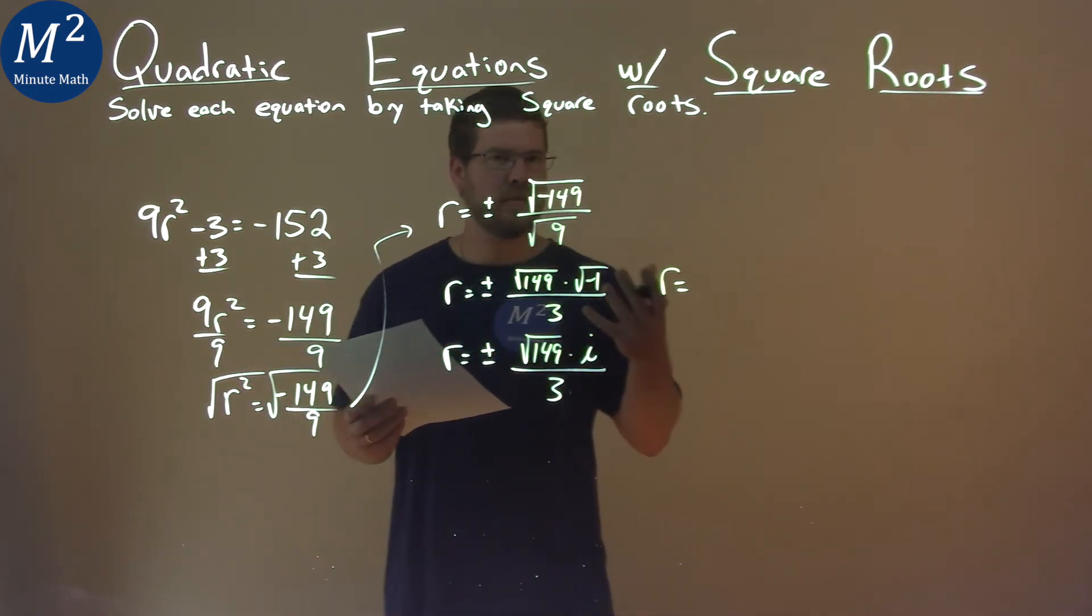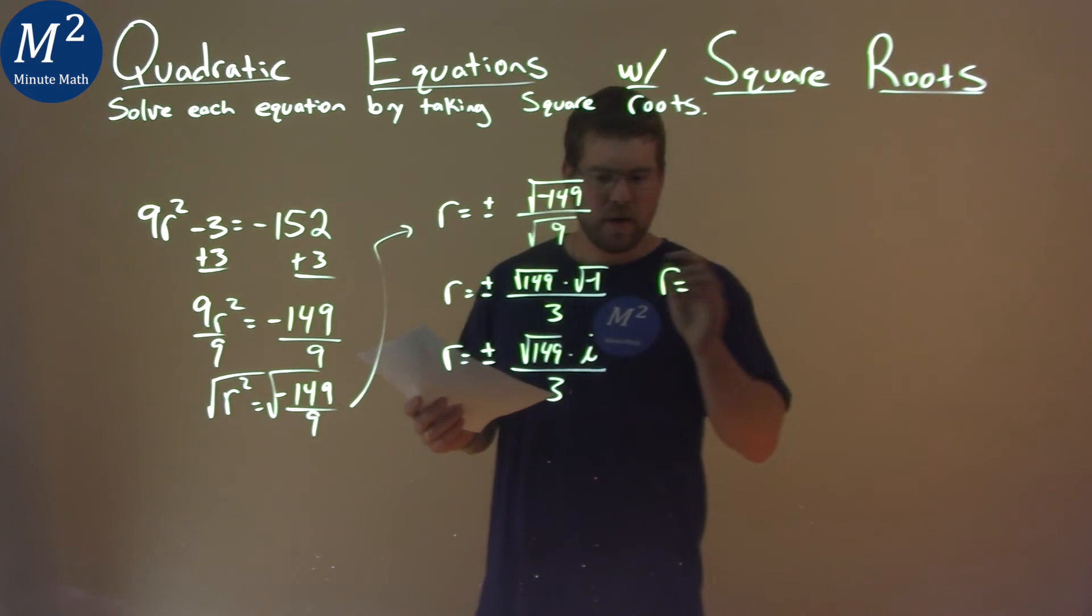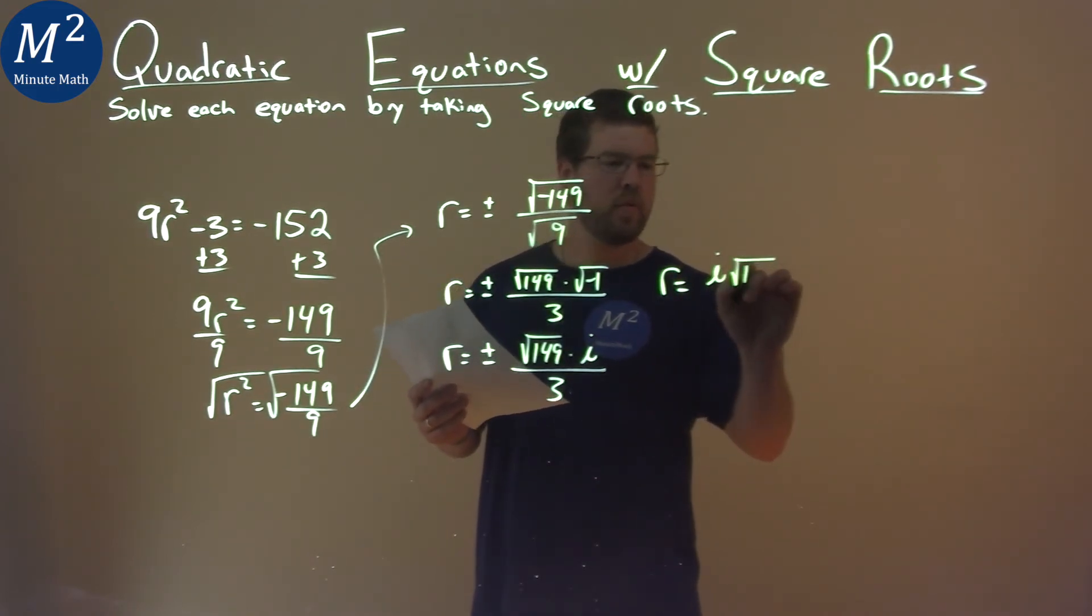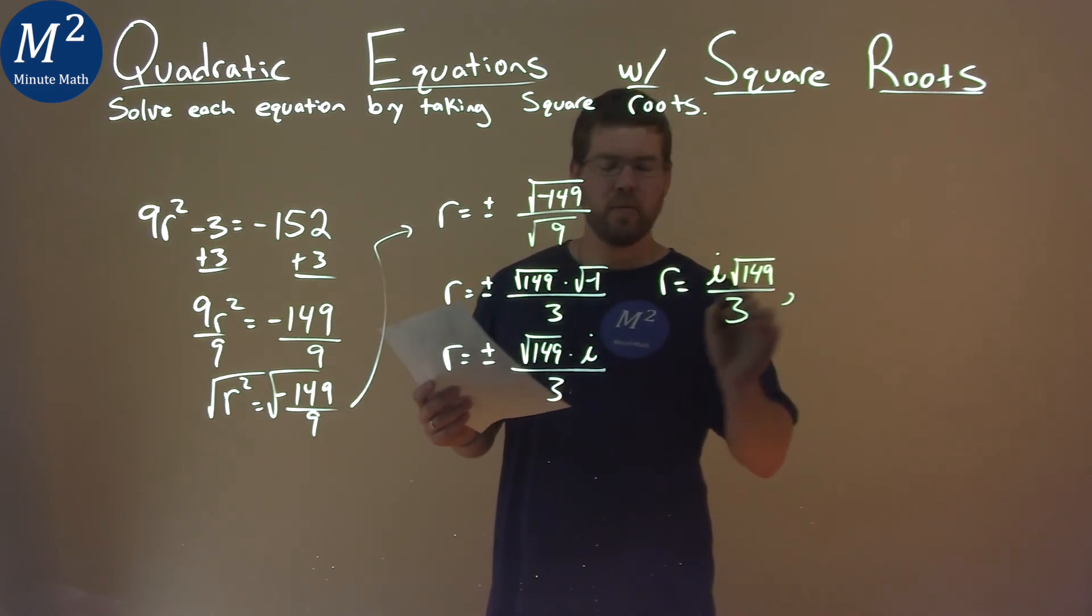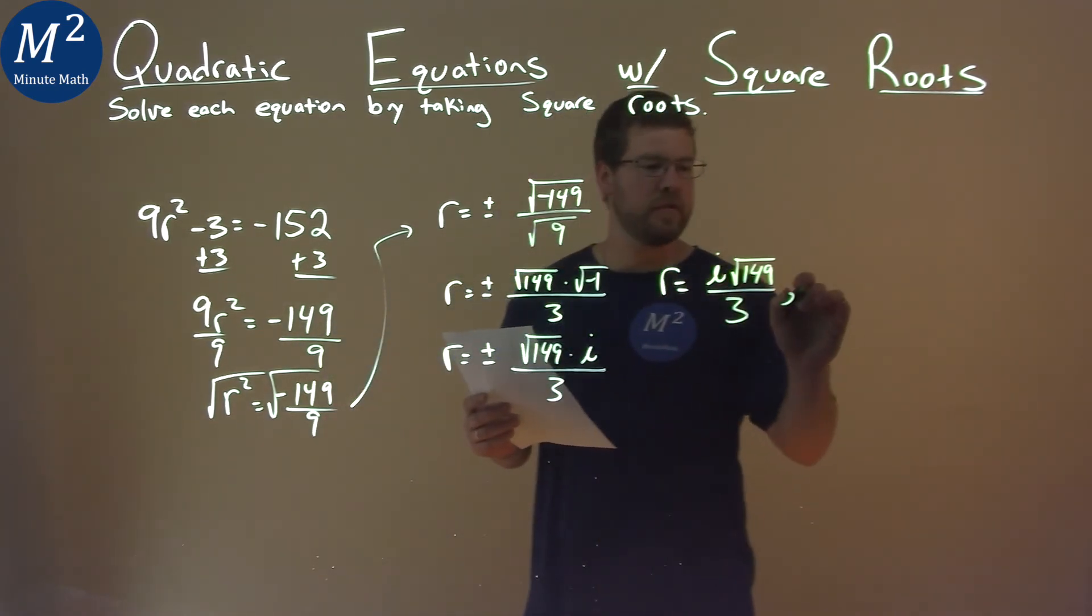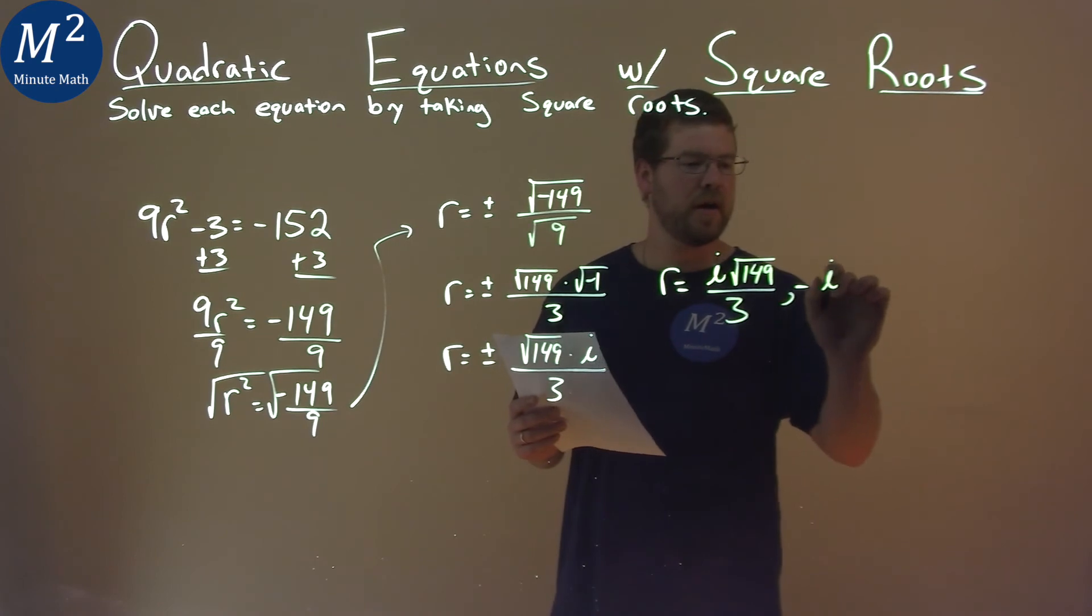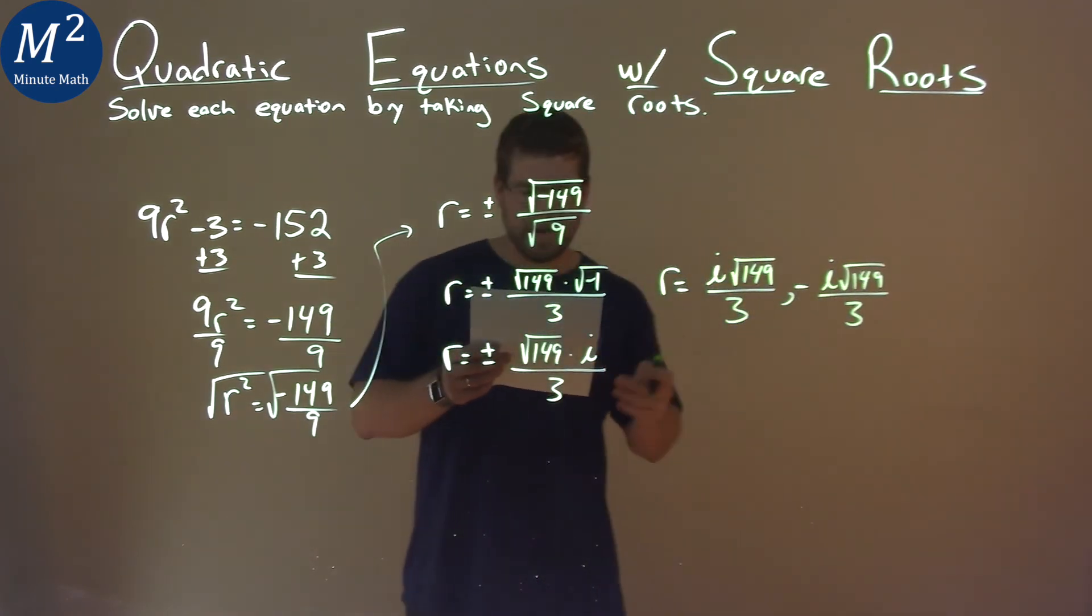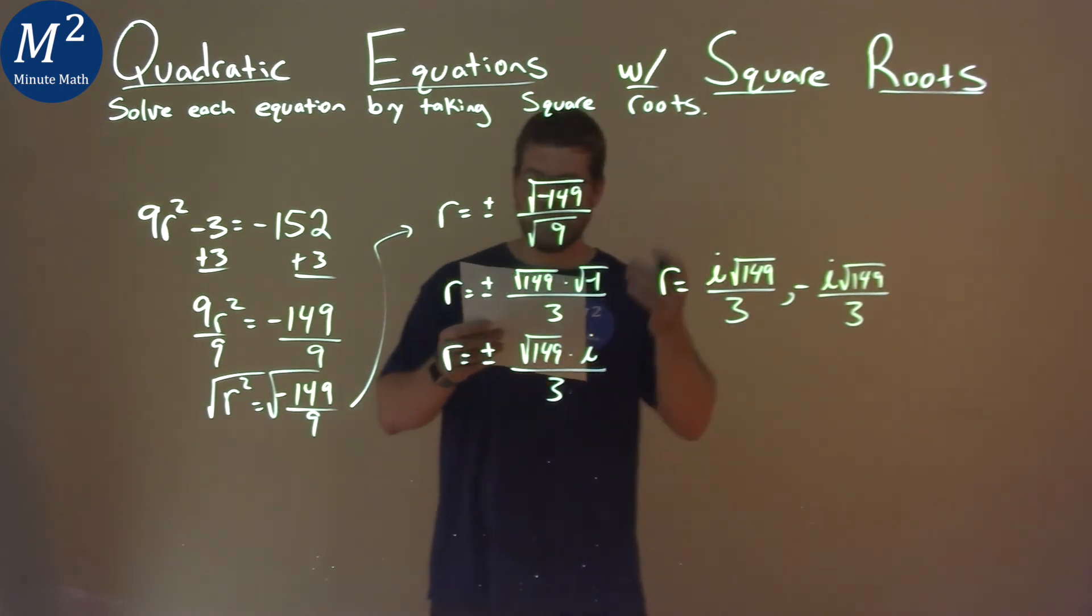We don't need to write the plus or minus, let's separate it out. Writing properly, put i first, so i times the square root of 149 over 3, and then we make sure we get the negative version of this, so negative i square root of 149 over 3, and that's it. That is our final answer.